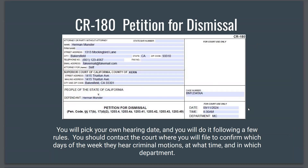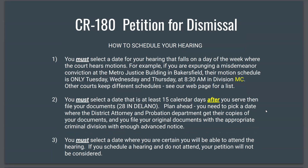You will also pick your own hearing date by following a few rules, and you should contact the court where you will file to confirm what days of the week are available for criminal motions, what time they're set, and in which department. The first rule is that you must select a date that falls on a day the court hears motions. For example, if you are expunging a misdemeanor conviction at the Metro building in Bakersfield, their motion schedule is only Tuesdays, Wednesdays, and Thursdays for misdemeanors at 8:30 a.m. in Division MC. Other courts keep different schedules and you can see our webpage for a list.